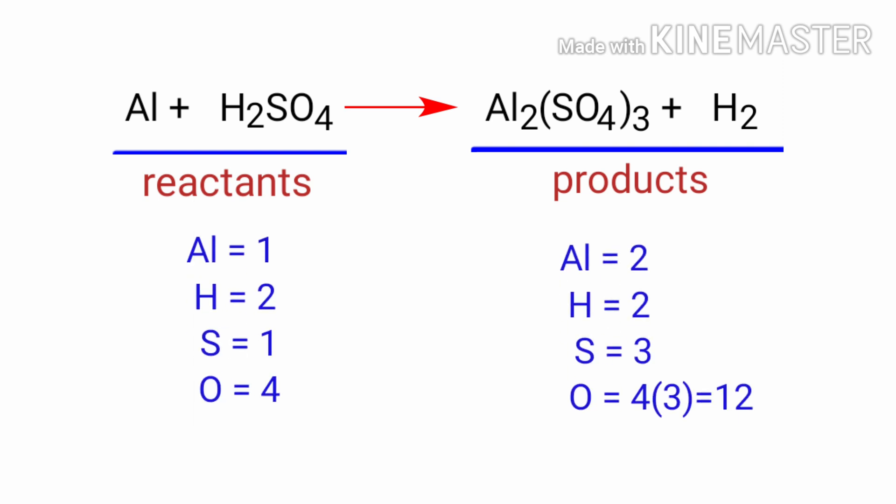If you look at this equation, the equation is not balanced. In the reactants side there are one Aluminium atom, two Hydrogen atoms, one Sulphur atom and four Oxide atoms.